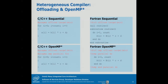For Fortran, it's basically the same. If you offload something like a call to a routine procedure, you get sequential code on the coprocessor. If you want to parallelize the code, you add an OpenMP parallel statement to the offload pragma to tell the compiler that this loop should be parallelized.